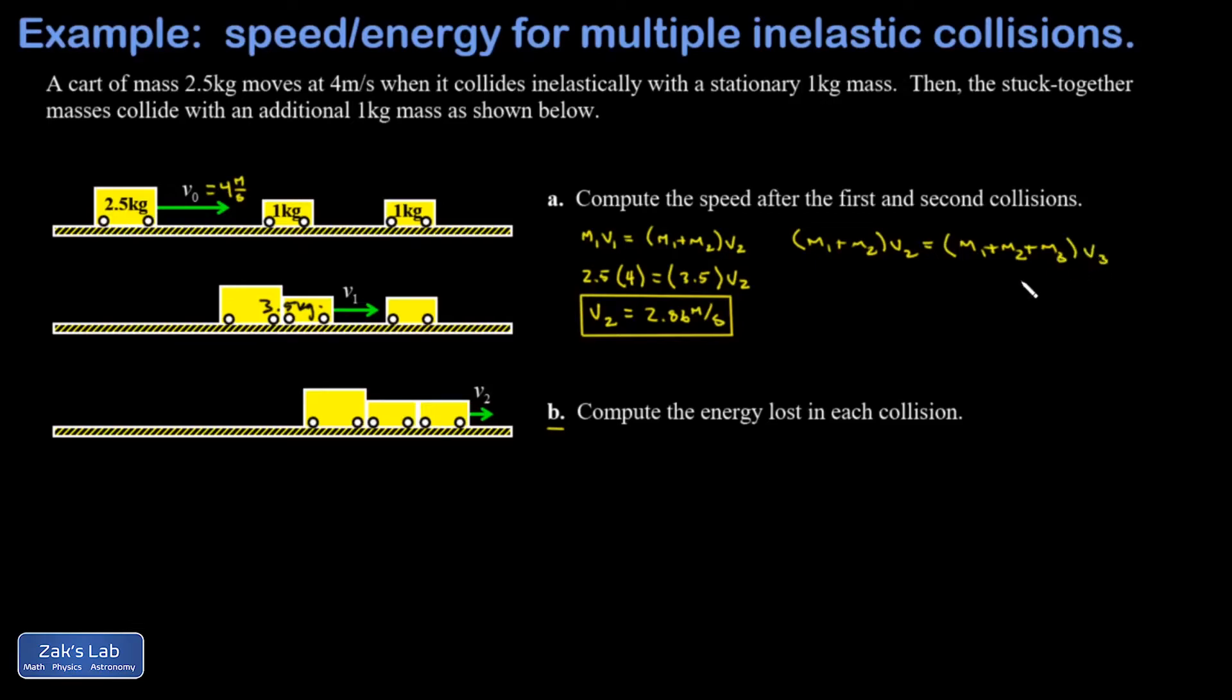Times that final speed v3. M1 plus m2 was 3.5 kilograms, v2 was 2.86 meters per second, and the sum of all three masses is going to be 4.5 kilograms. V3 is our unknown here and we can solve for that quickly and we get 2.22 meters per second.